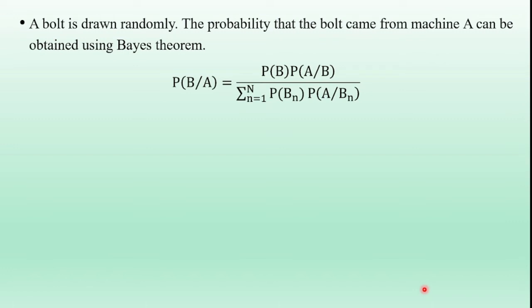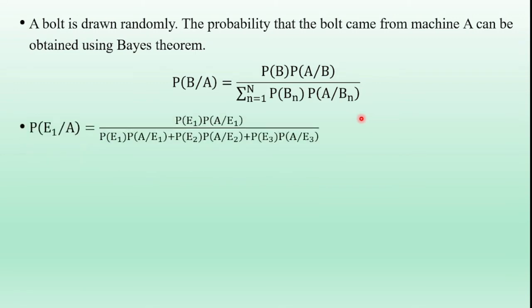A bolt is drawn randomly. The probability that the bolt came from machine A can be obtained using Bayes' theorem. The standard expression is: P(B|A) = P(B) · P(A|B) divided by the sum from n=1 to n of P(Bn) · P(A|Bn). Using this expression, we can determine P(E1|A), P(E2|A), and P(E3|A). There are 3 mutually exclusive events, so the denominator expands to P(E1)·P(A|E1) + P(E2)·P(A|E2) + P(E3)·P(A|E3).